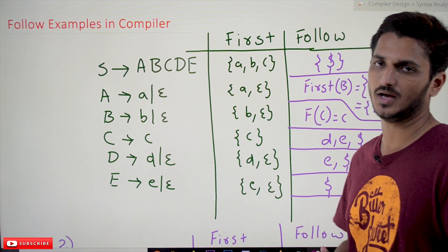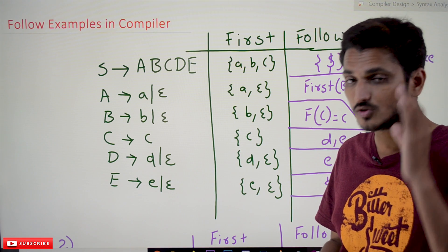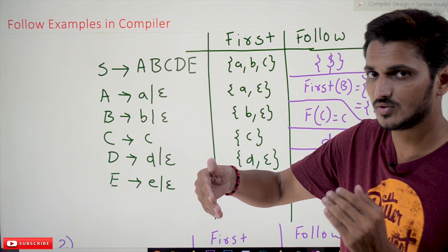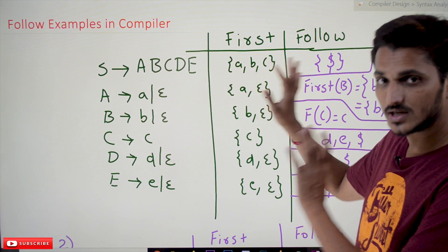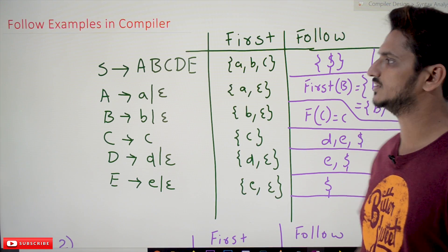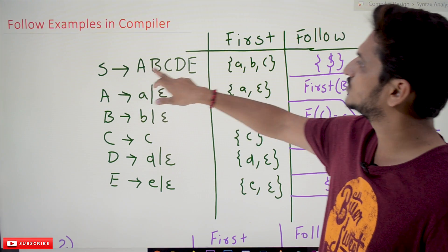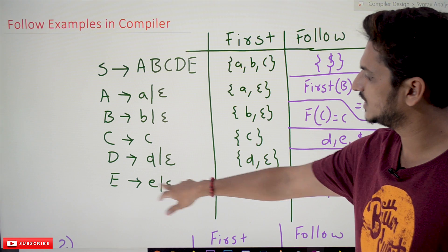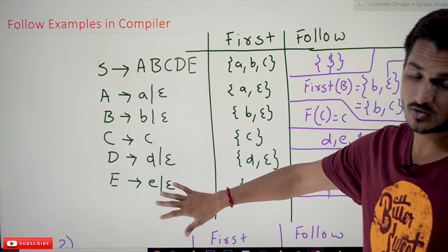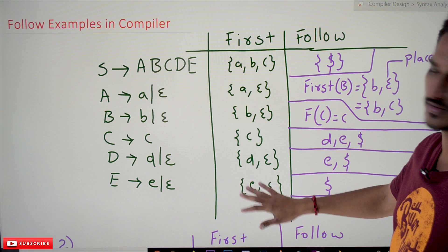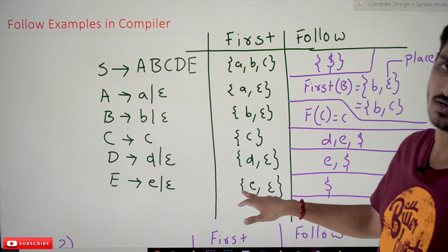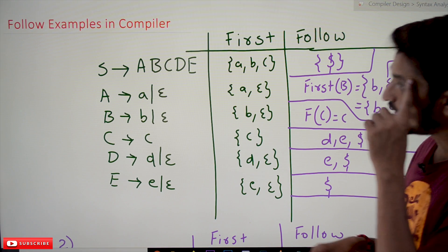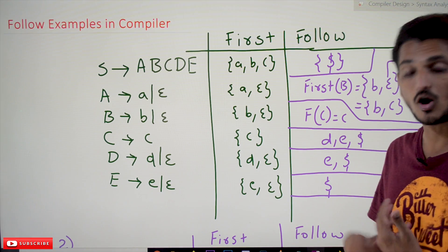Coming to the first example — if you understand that, please remember our four different points which we discussed previously. From that, this example is very easy. If you understand the first example, the remaining examples are also very easy. This is the grammar: S tends to a b c d e, a tends to a or epsilon, b tends to b or epsilon, c tends to c, d tends to d or epsilon, e tends to e or epsilon. For this grammar we have to find the FOLLOW symbols. Before that, we find the FIRST symbols — these are all the FIRST symbols for the grammar.